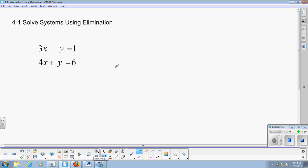Now as I said a little bit ago, what we want to look for, or we want to create, is we want to create opposites. We want to create opposites when we do this. So you look at your system, and I have 3x over 4x, a minus y over a plus y, and a 1 over a 6.